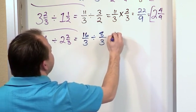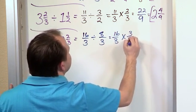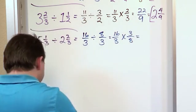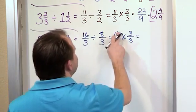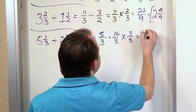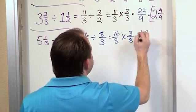And then here we change this to multiplication. 16 over 3 times, and we flip this one to 3 eighths. And so then, we have 16 times 3 on the top, which if you do 16 times 3, you'll find that that's 48. And 3 times 8 is 24. So we have 48 over 24.